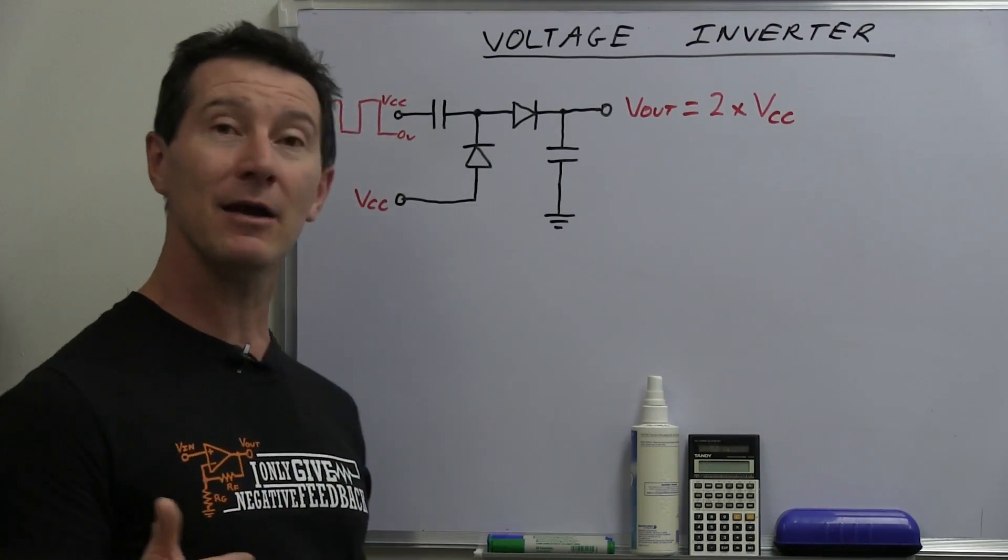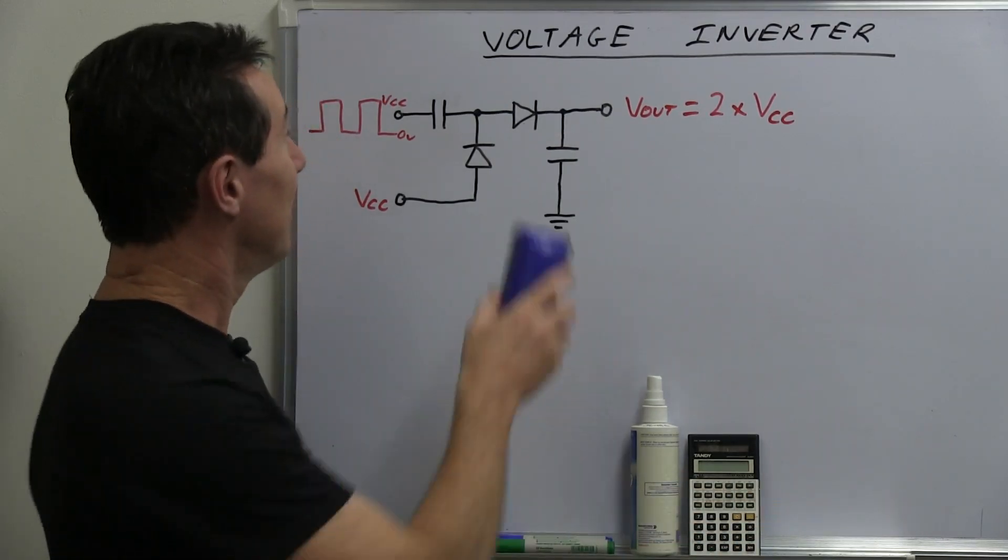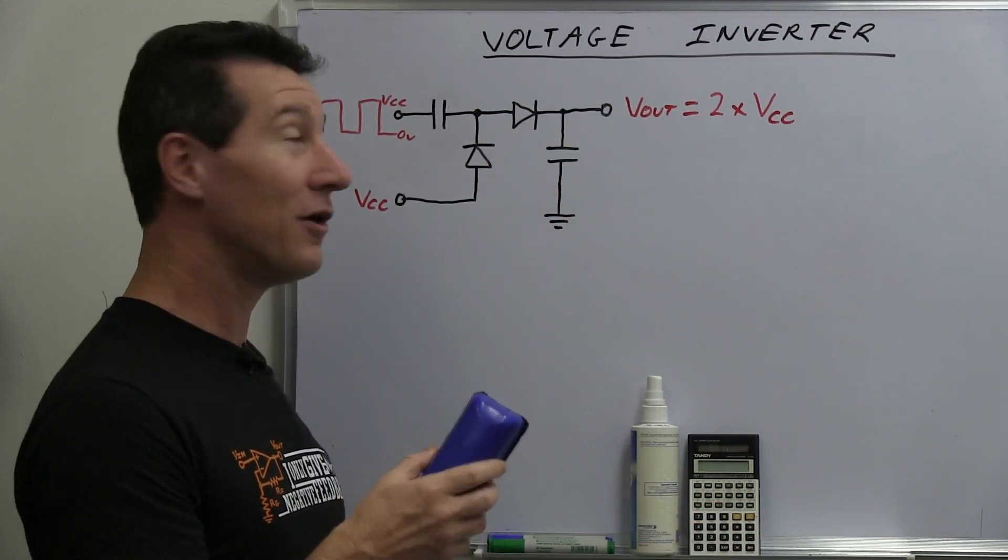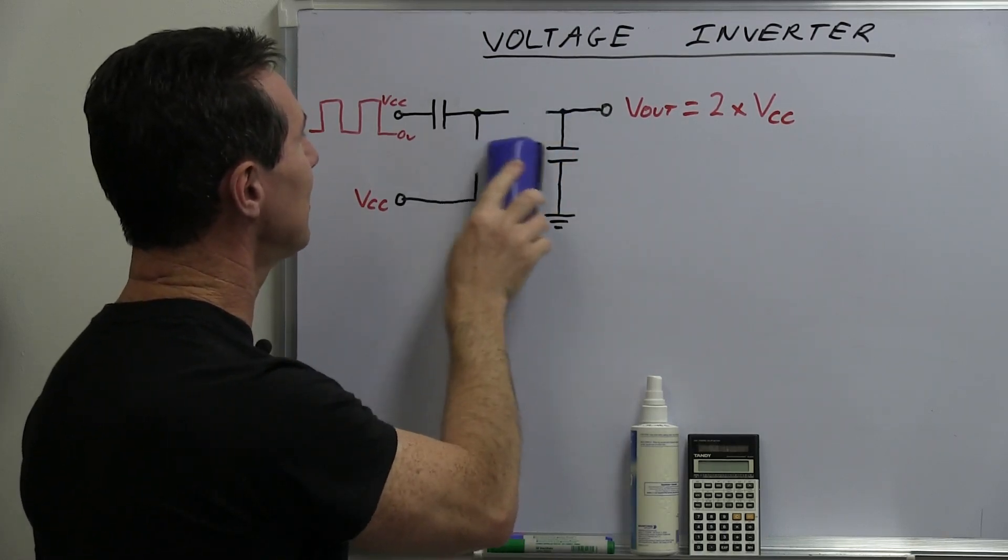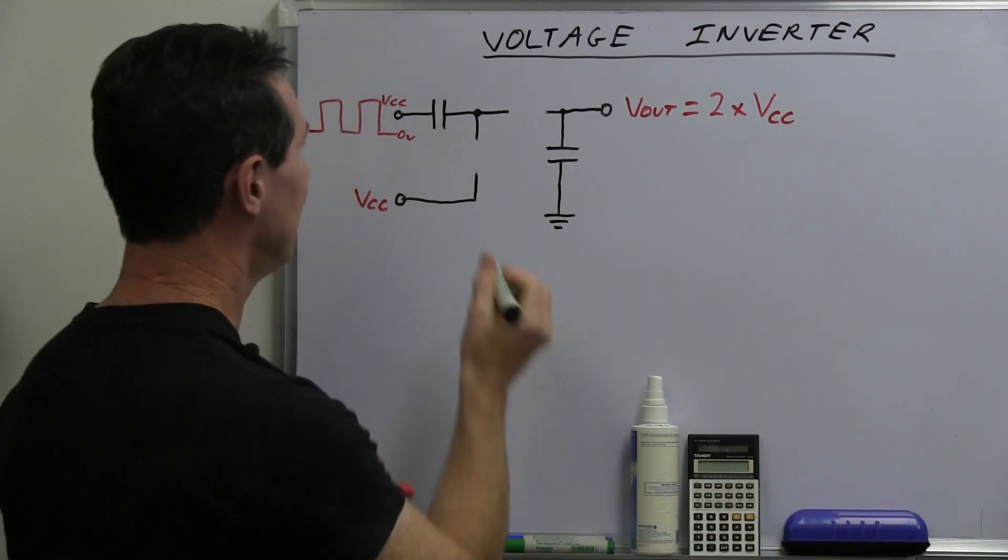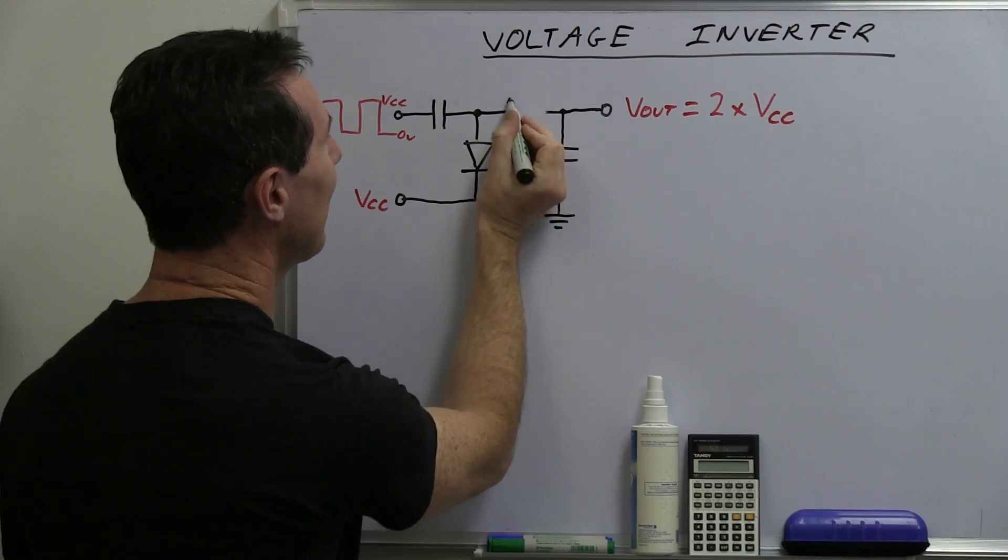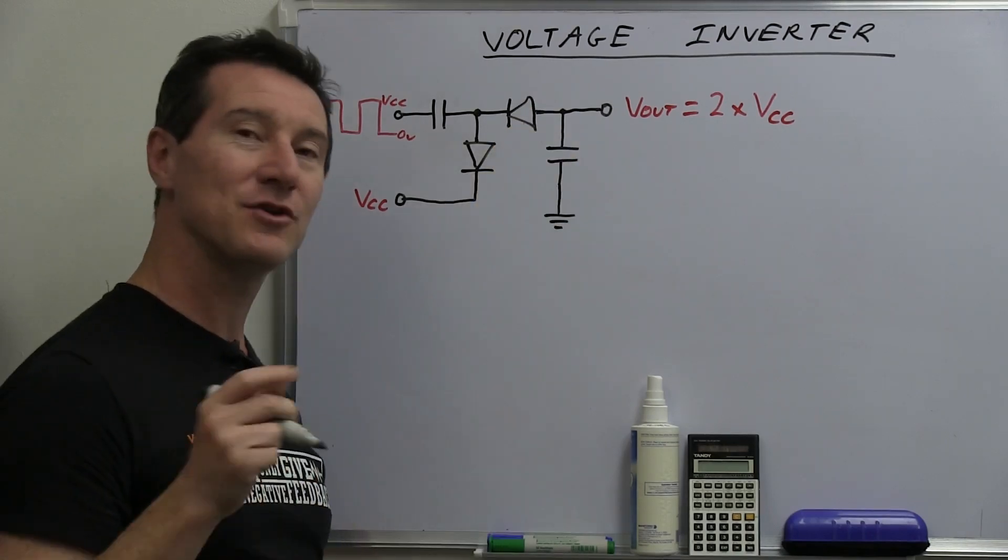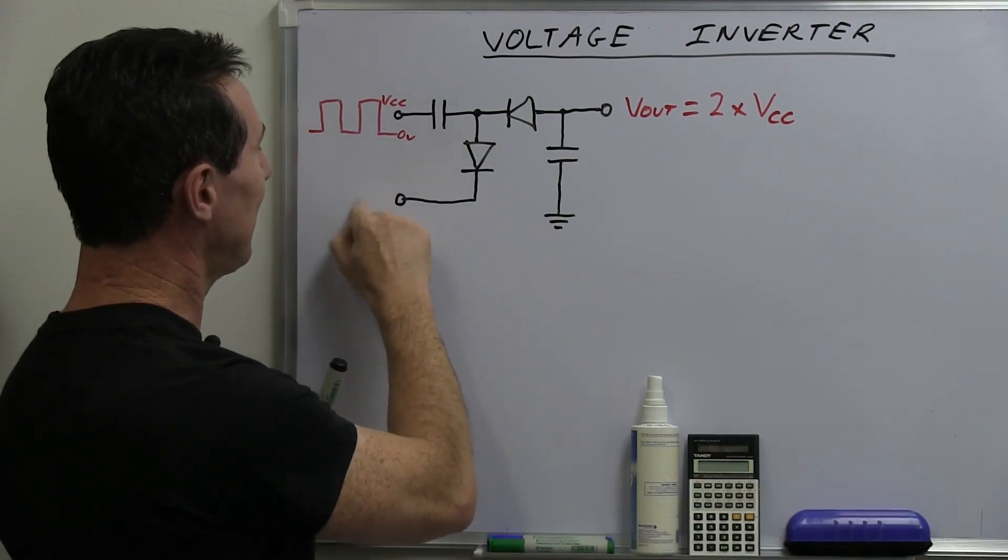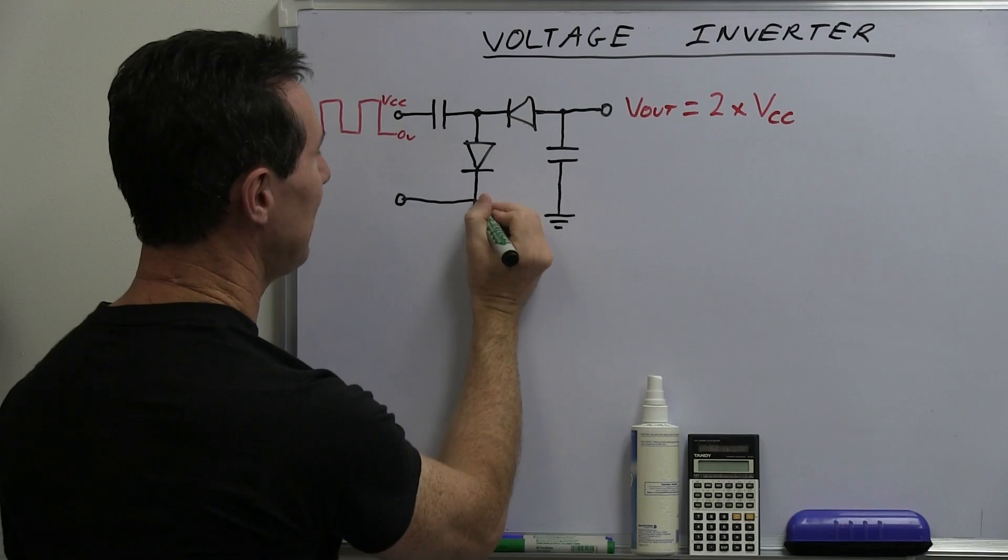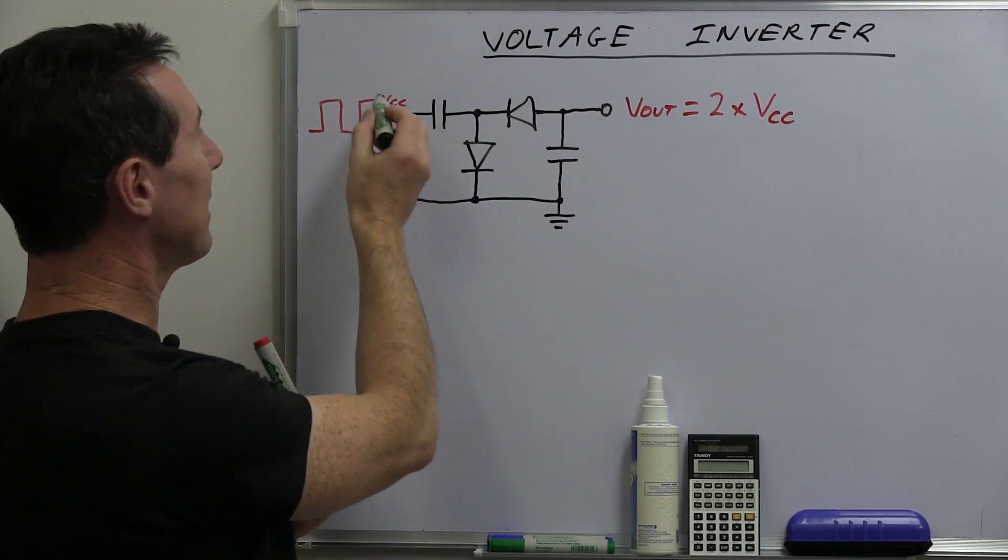Now, how do you get a voltage inverter? Well, it's very simple. Instead of doubling, we want to invert. So what do we do? We erase these diodes here, and we draw them the other way around. Like that. But that's not all we have to do.